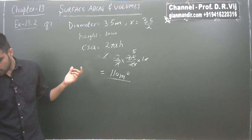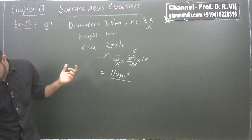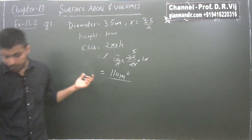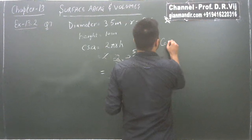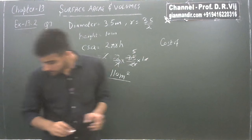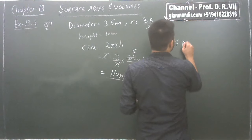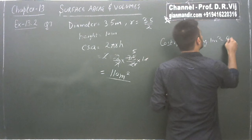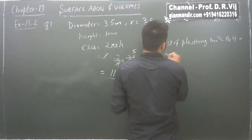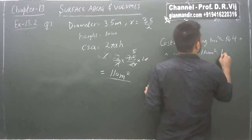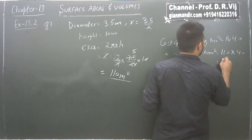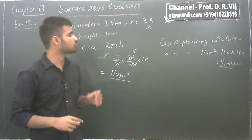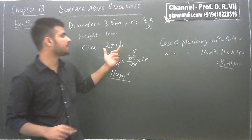Now the second part says: find the cost of plastering this curved surface at the rate of rupees 40 per meter square. Cost of plastering 1 meter square is ₹40, so cost of plastering 110 meter square will be 110 × 40, which comes out to be ₹4,400. That is the cost of plastering the inner surface area of the well.